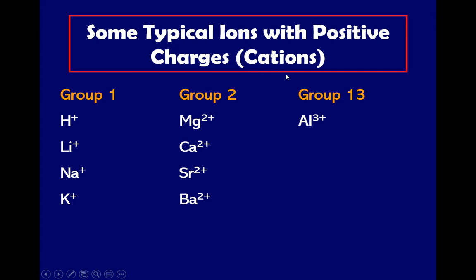So some typical ions with positive charges - if the ion is positive, the term that we use is cations. In group number one, we have hydrogen, lithium, sodium, and potassium. Group number two we have magnesium, calcium, strontium, and barium. And we have group number three, next to the transitional metal, is aluminum positive three.